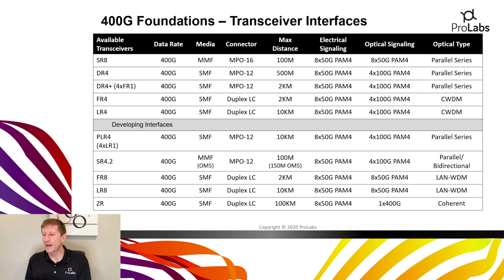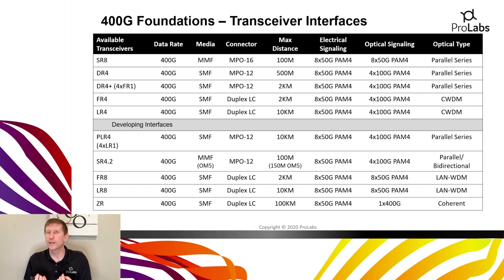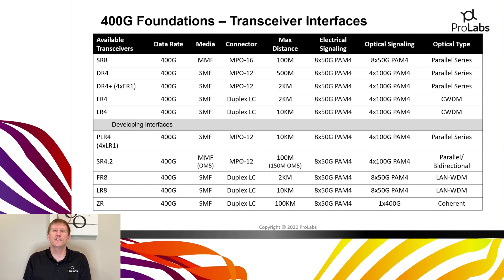Moving to the single-mode side, there are a couple of MPO-type parallel transceiver options: the DR4 and the DR4 Plus. These transceivers use the MPO-12 connector — similar to what we've used for breakout connections over the years — for 500-meter and two-kilometer reaches. Where things get interesting is with the FR4 and LR4, which use duplex LCs. These are still 4x100 optical on the PAM4 side, but they multiplex those four lanes onto a single fiber. All these transceivers are 8x50 gig PAM4 on the electrical side.